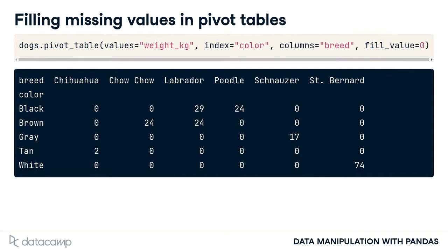Instead of having lots of missing values in our pivot table, we can have them filled in using the fill_value argument. Here, all of the NaNs get filled in with zeros.